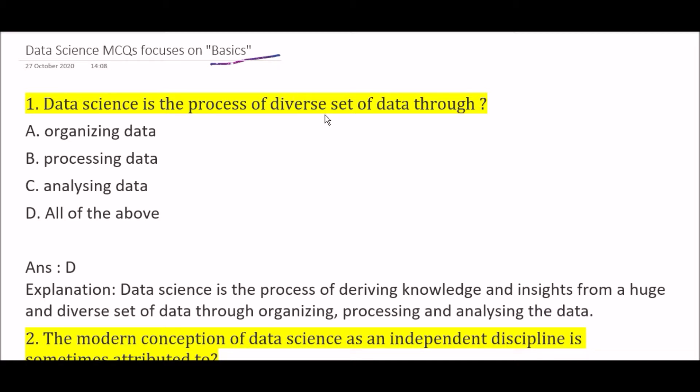First question: Data science is the process of a diverse set of data through — Option A: organizing data, Option B: processing data, Option C: analyzing data, Option D: all of the above. The right answer is Option D, all of the above, because data science is the process of deriving knowledge and insights from a huge and diverse set of data through organizing, processing, and analyzing the data.